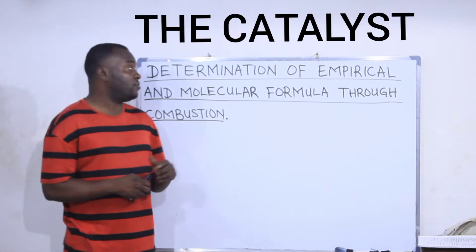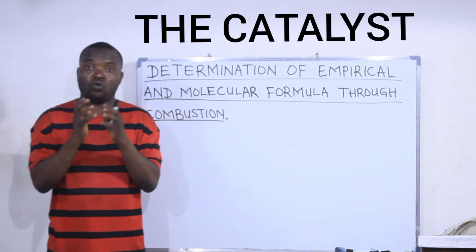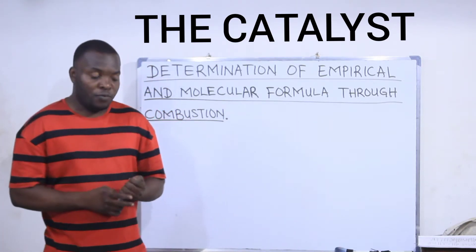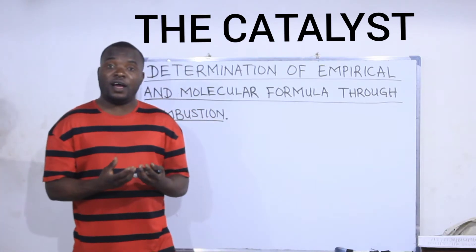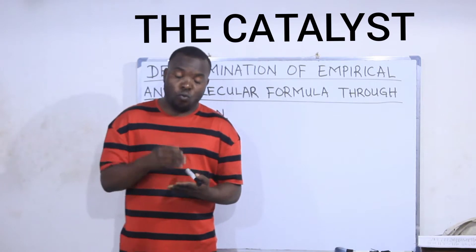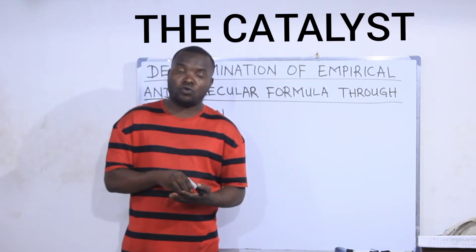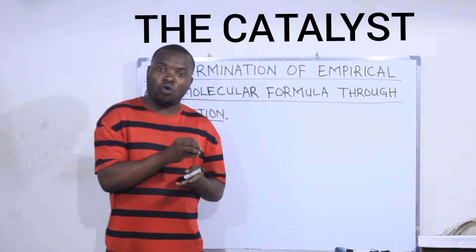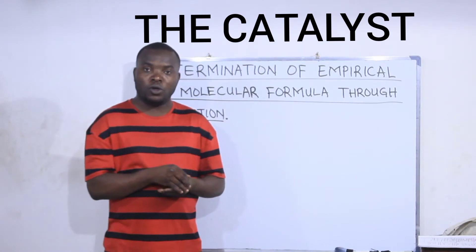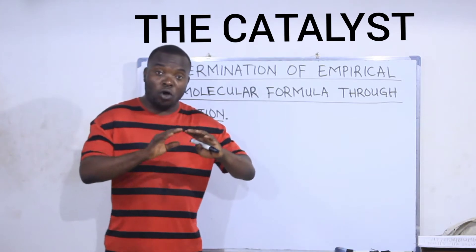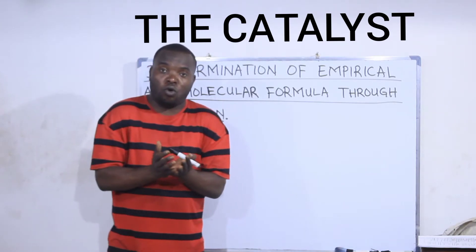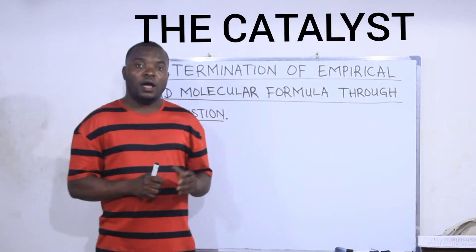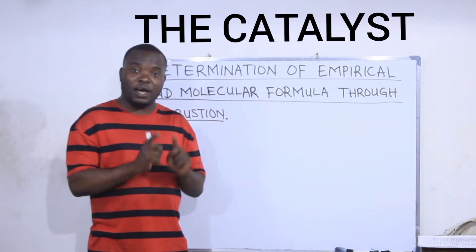Today we'll be looking at how to determine or calculate the empirical formula of an organic compound through combustion. If we have a sample of an organic compound and we want to determine the empirical and molecular formula, we carry out combustion of the compound. We allow the compound to burn, and during that process, all the CO2 that comes out during the combustion is well collected — none will be allowed to escape — and the water molecules will also not be allowed to escape.